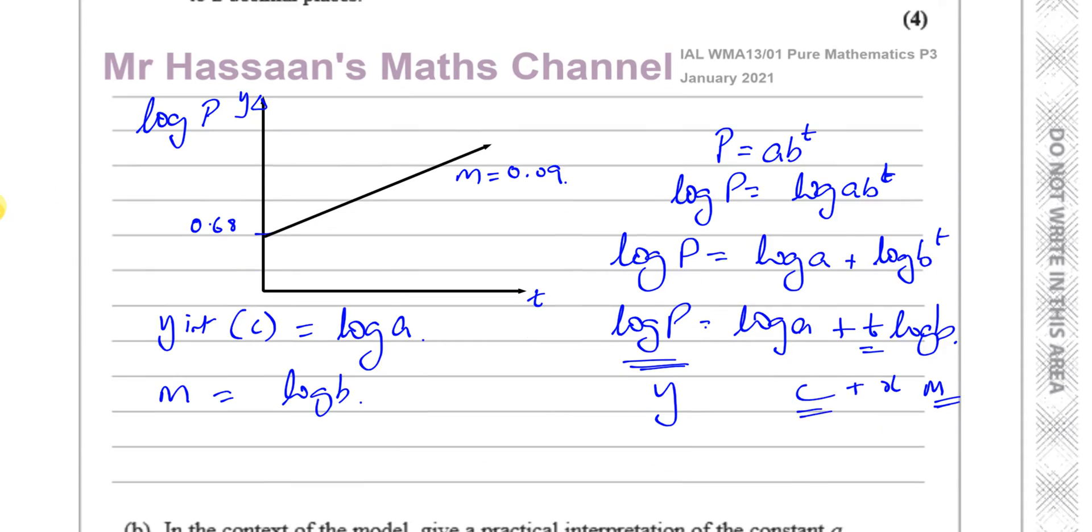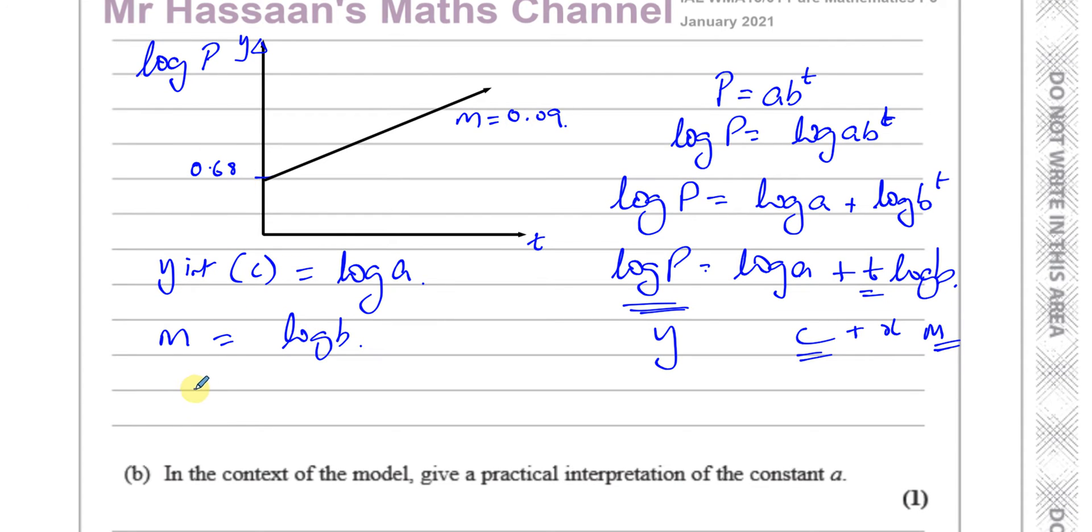So all we can say now is I know the Y-intercept is 0.68, so I can say the log of A is equal to 0.68. Remember this means log to the base 10. So we can say A is equal to 10 to the power of 0.68. And similarly for B, I can say log to base 10 B is equal to the gradient, which is 0.09. So I can say that B equals 10 to the power of 0.09.